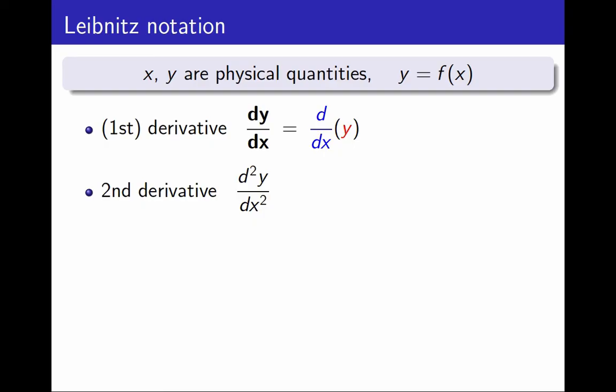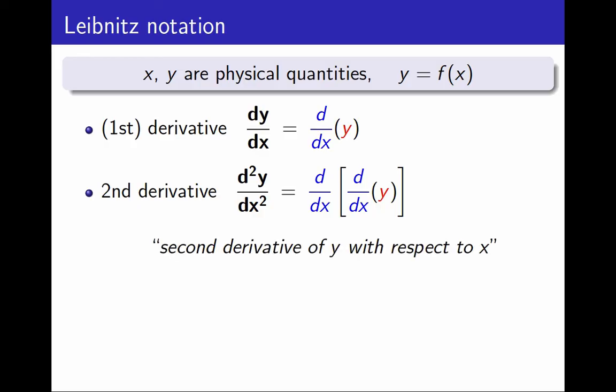I start with the physical quantity y, I apply the operator d over dx to it, and then I apply the operator d over dx to it again. That is why I write the 2s in exactly those places. The 2 in the numerator tells us that we performed two operations, two derivatives to the physical quantity y. The 2 in the denominator tells us that we took both derivatives with respect to x. And we call this the second derivative of y with respect to x.